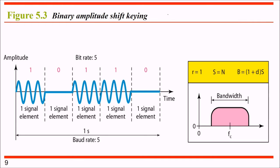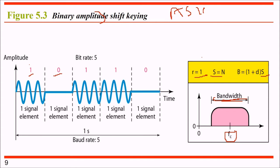This is amplitude shift keying (ASK). Consider a bit rate of 5 bits per second with bits 1, 0, 1, 1, 0. In ASK, the signal is present for bit 1 and absent for bit 0. So if there is amplitude, we say it is 1; otherwise we say 0. Here R equals 1, S equals N, and bandwidth B equals (1 plus D) times S, where FC is the central frequency.